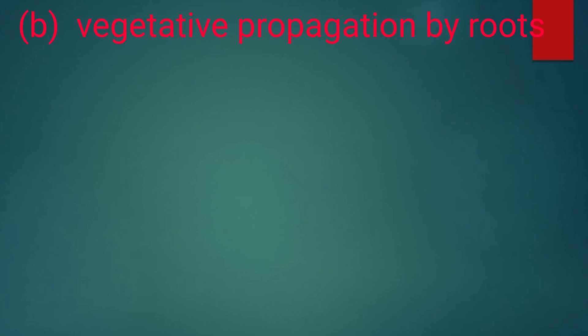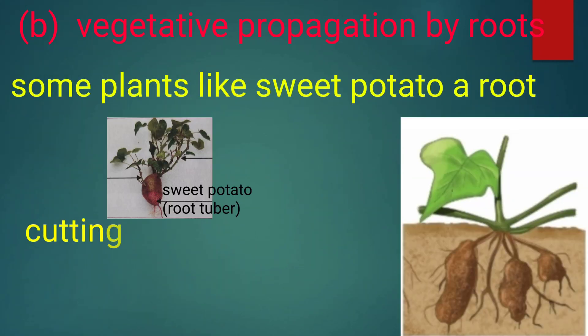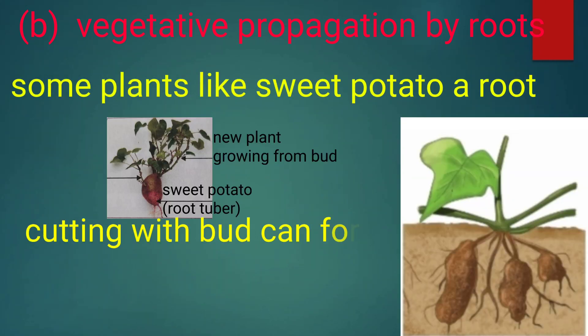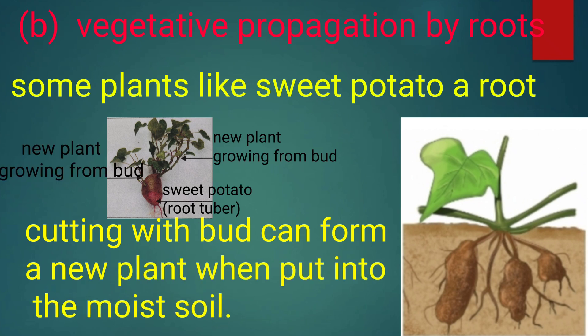Now, vegetative propagation by roots. Some plants like sweet potato — a root cutting with a bud can form a new plant when put into the moist soil.